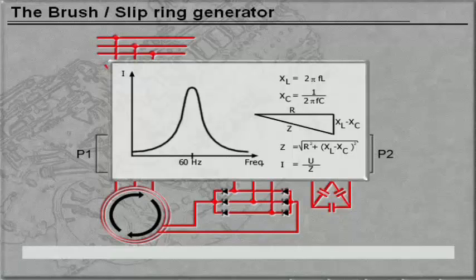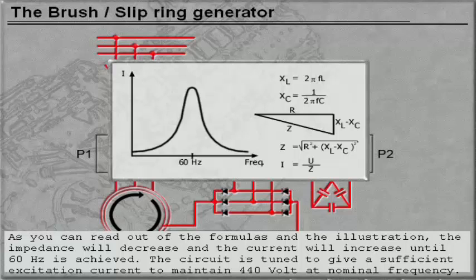As you can read from the formulas and the illustrations, the impedance will decrease and the current will increase until 60 Hz is achieved. The circuit is tuned to give a sufficient excitation current to maintain 440 volts at nominal frequency.